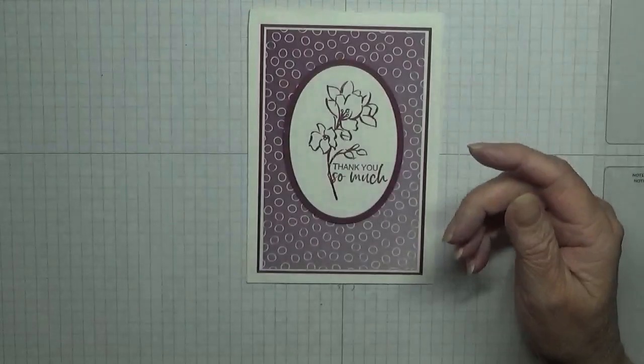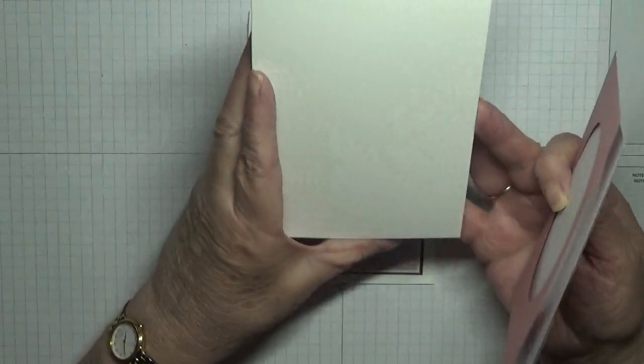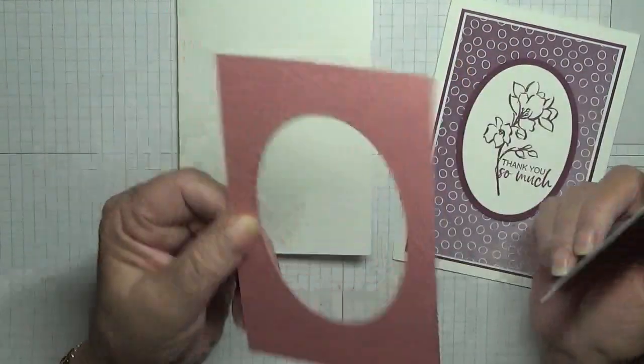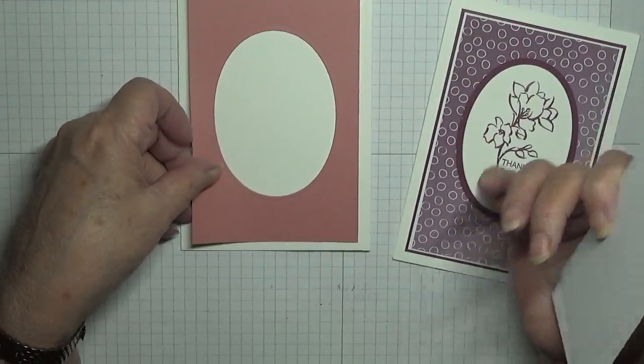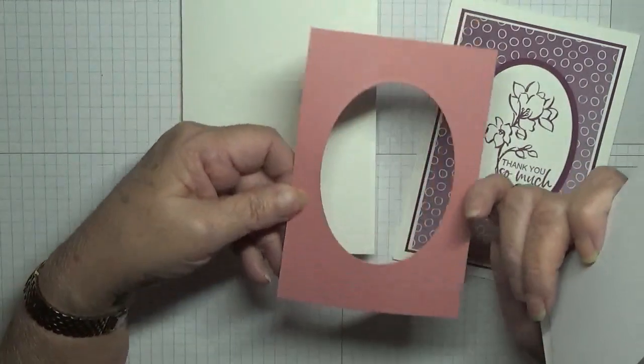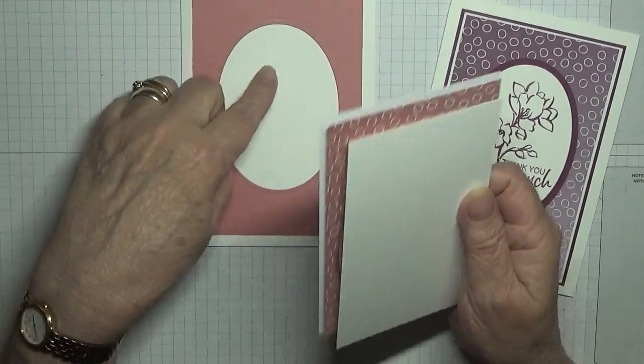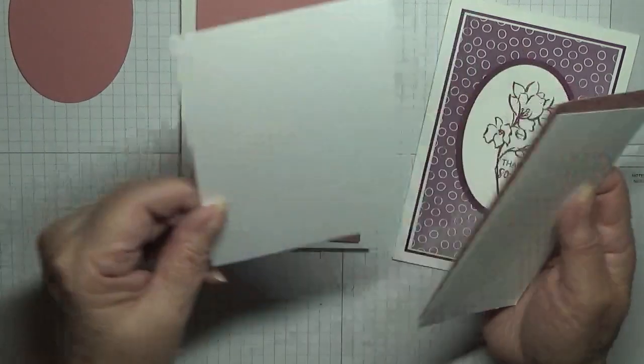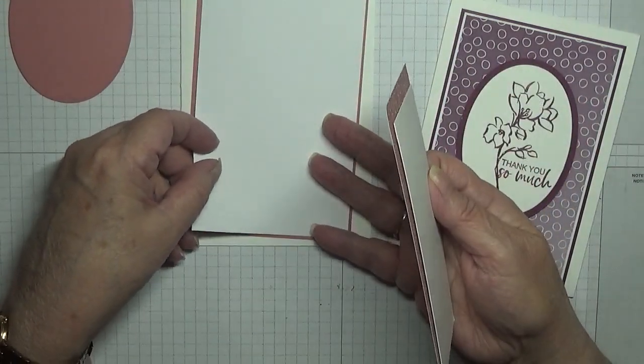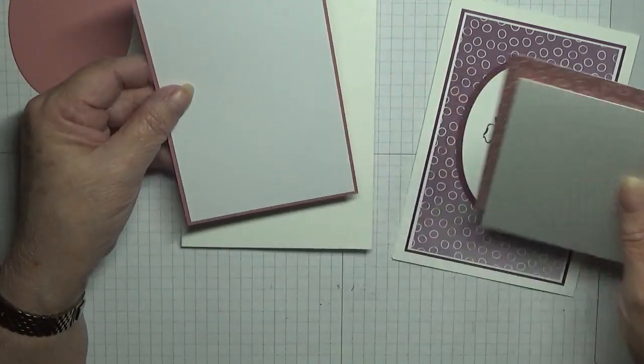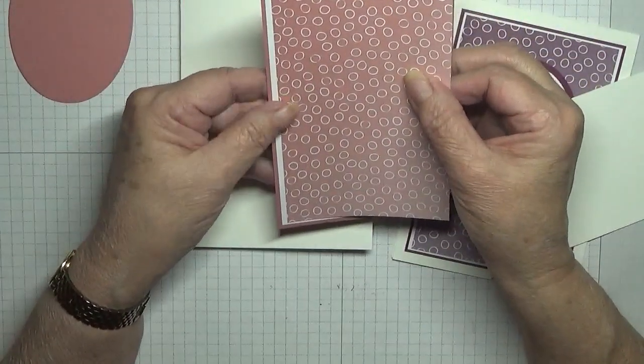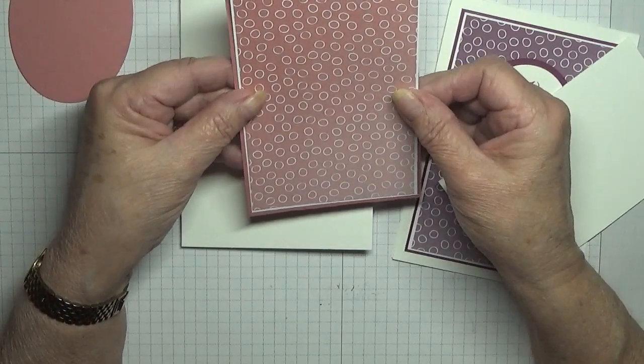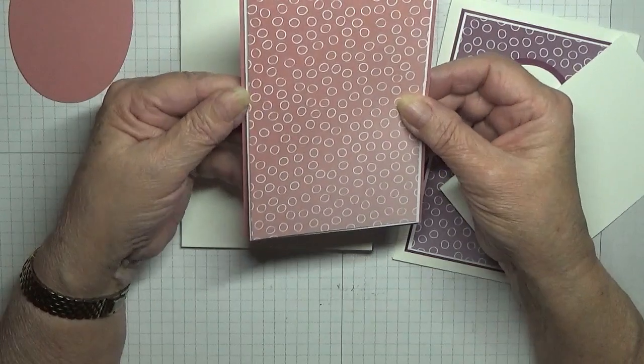I have got a white card base of eight and a quarter by five and seven-eighths, scored at four and one-eighth. A piece of Rococo Rose cardstock - this measures three and five-eighths by five and three-eighths because I wanted a bigger border. As you can see I've got the middle cut out for a large oval, but you won't see that because we're going to put over a piece of white card at five and a quarter by three and a half. Then I've got Rococo Rose Oso Ombre paper from Celebration. This one measures five and one-eighths by three and three-eighths and that goes over the top like that.